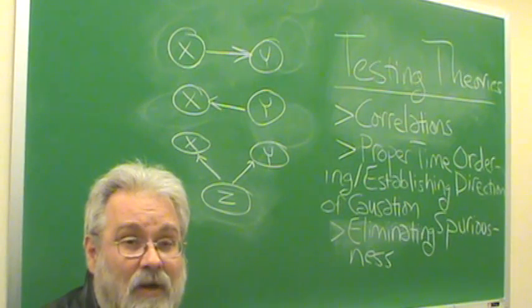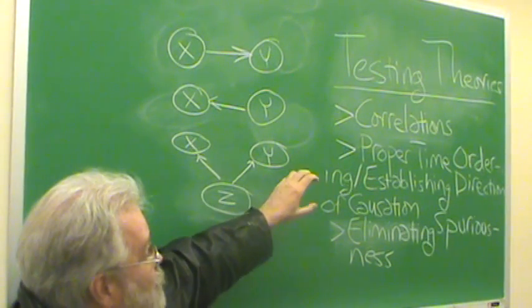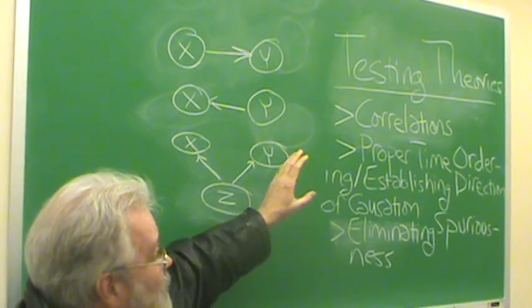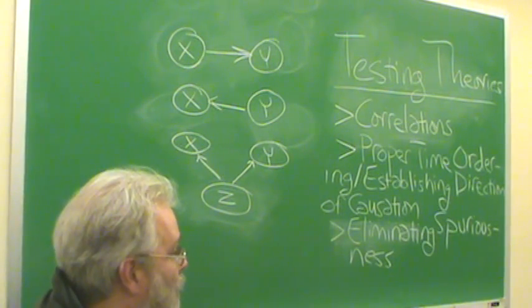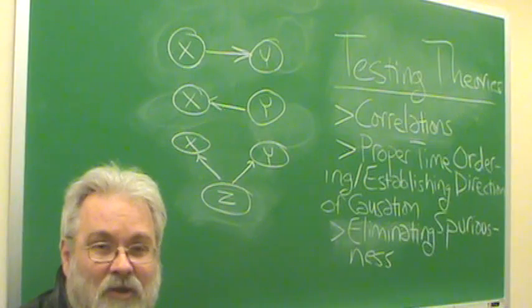Now we're going to turn to a second thing that you have to demonstrate in order to test causal theories, and that's establishing proper time order and establishing the direction of causation.